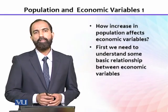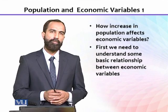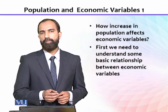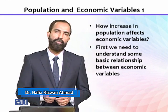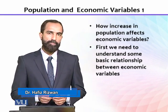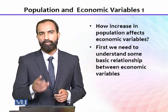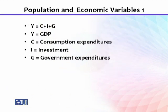After discussing the relationship between different economic variables — microeconomic and macroeconomic — now we are coming to the basic question: how does an increase in population affect different economic variables? To summarize this, we first need to understand certain macroeconomic relationships. This is known as the national income equation: Y = C + I + G in a closed economy.